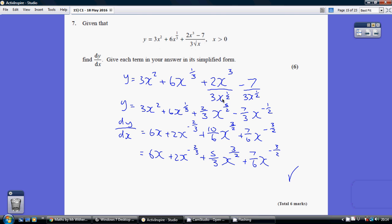Then let's take everything upstairs. 2 divided by 3 is 2 thirds. And x to the 3 divided by x to the half, when you divide you subtract the powers. So that's x to the power of 2 and a half.